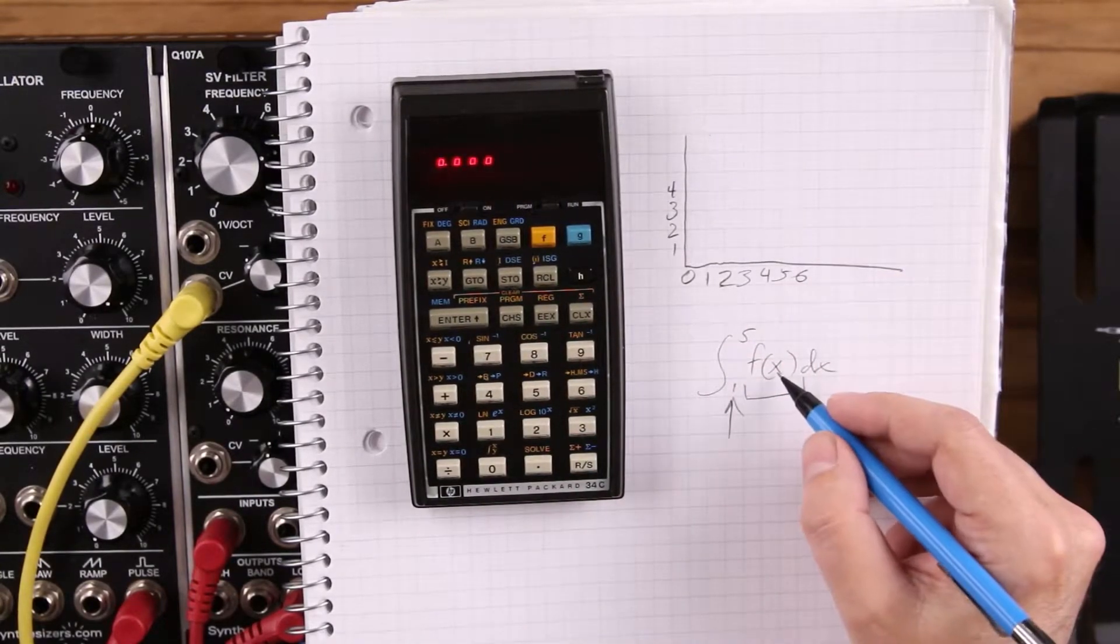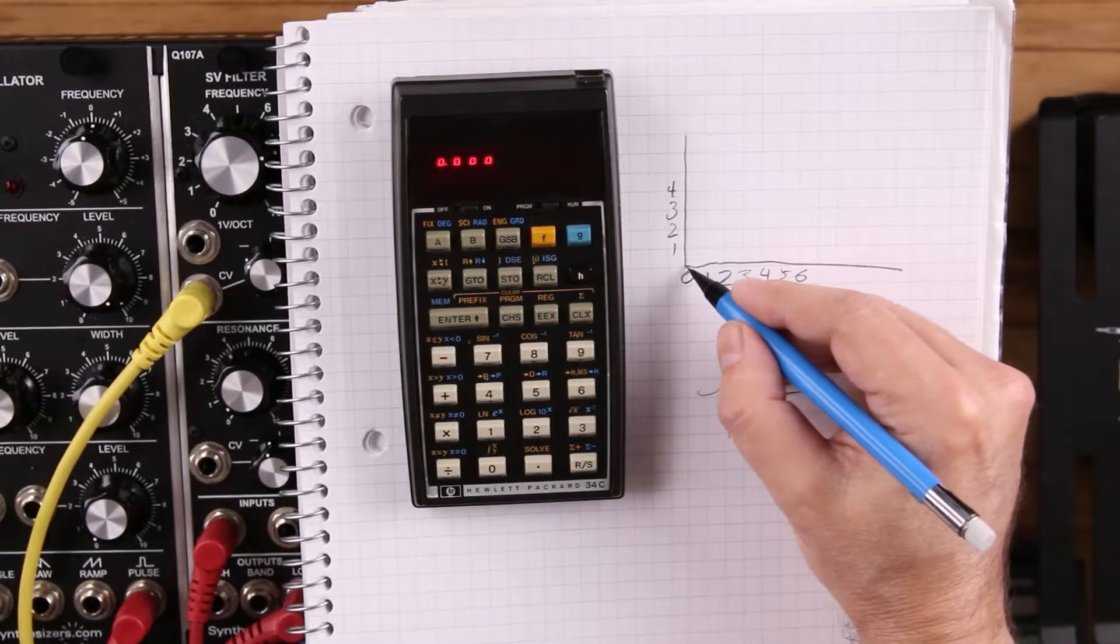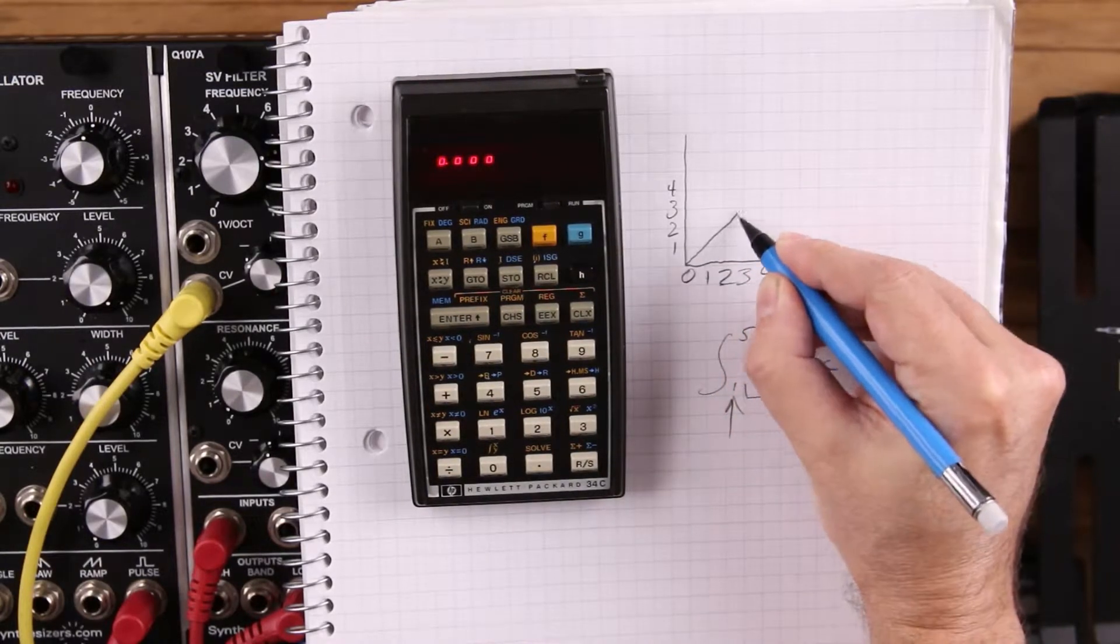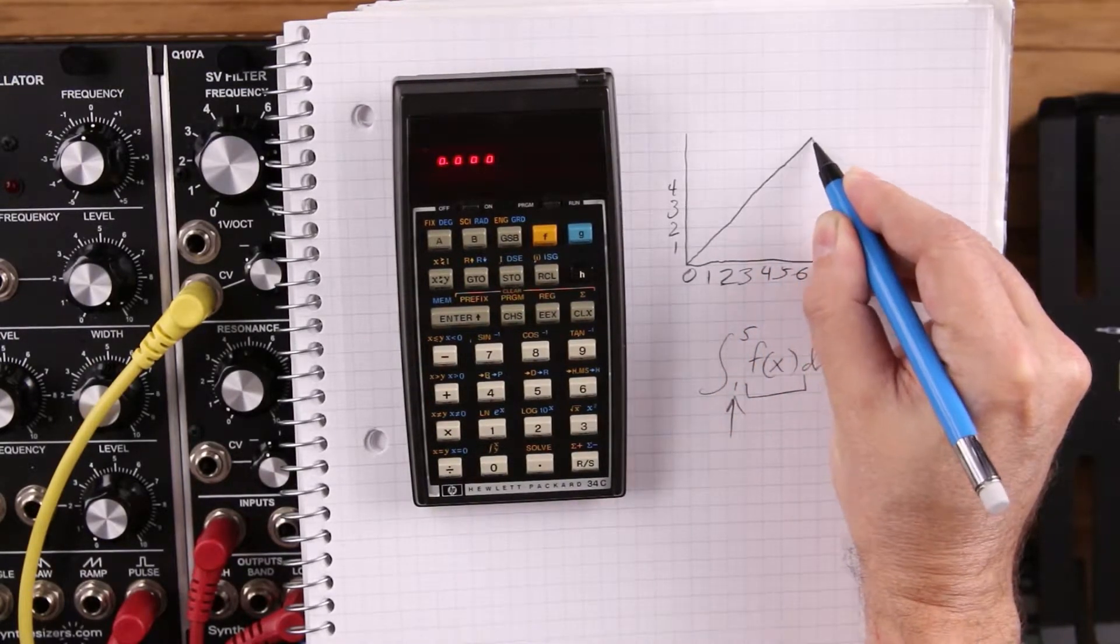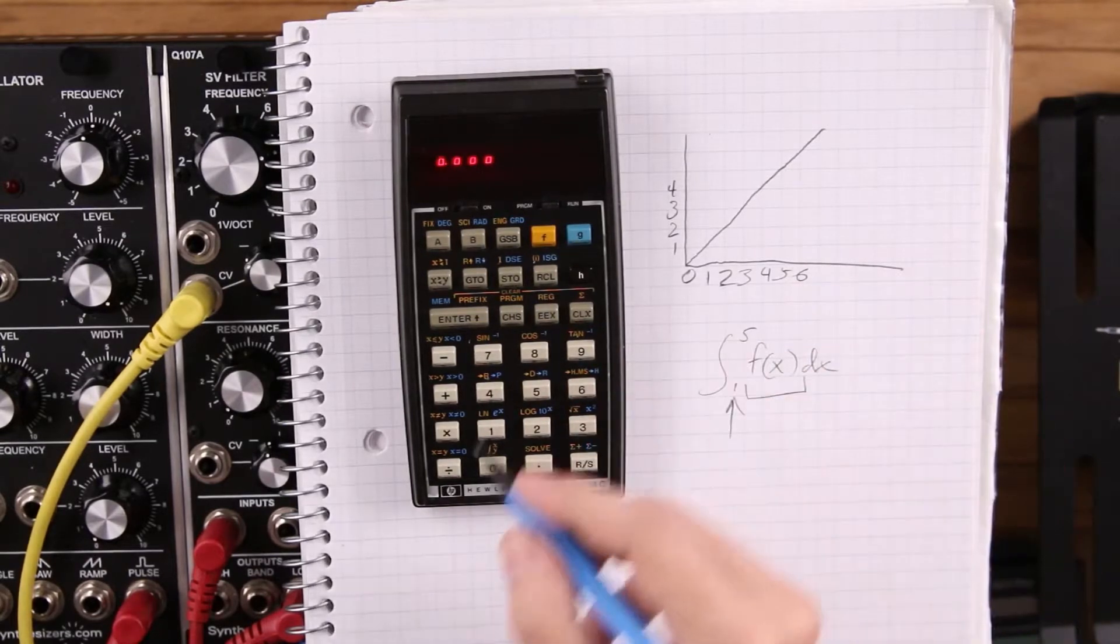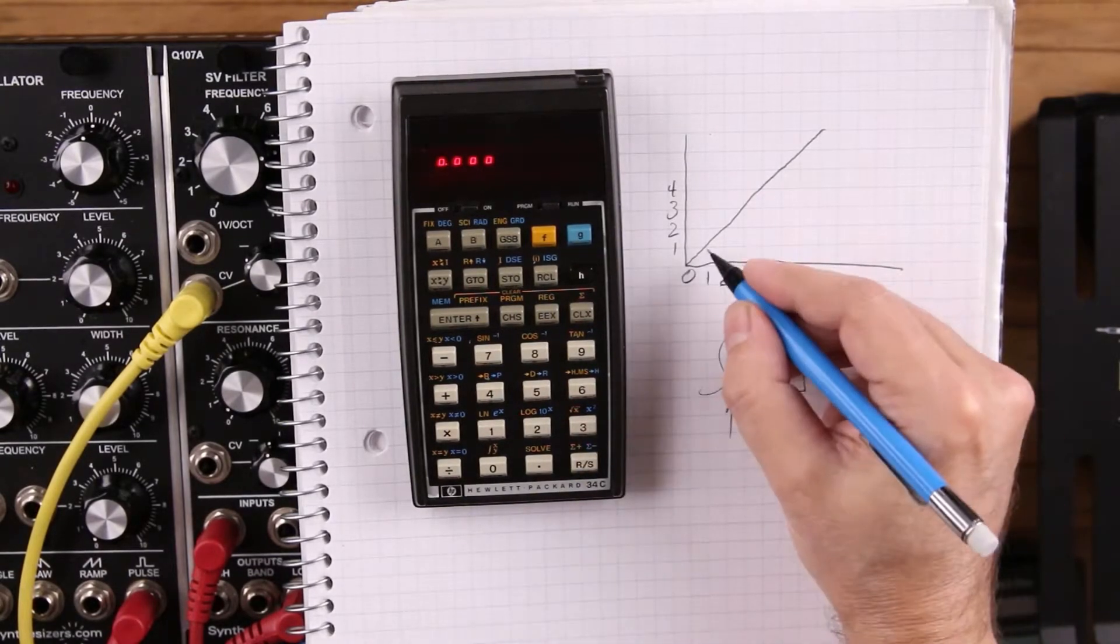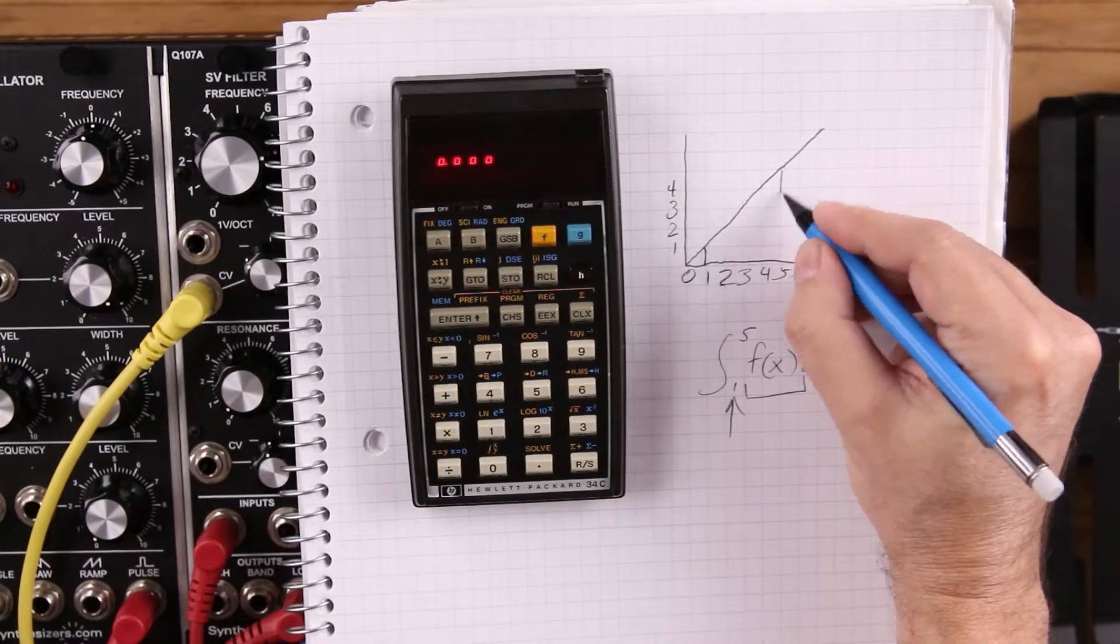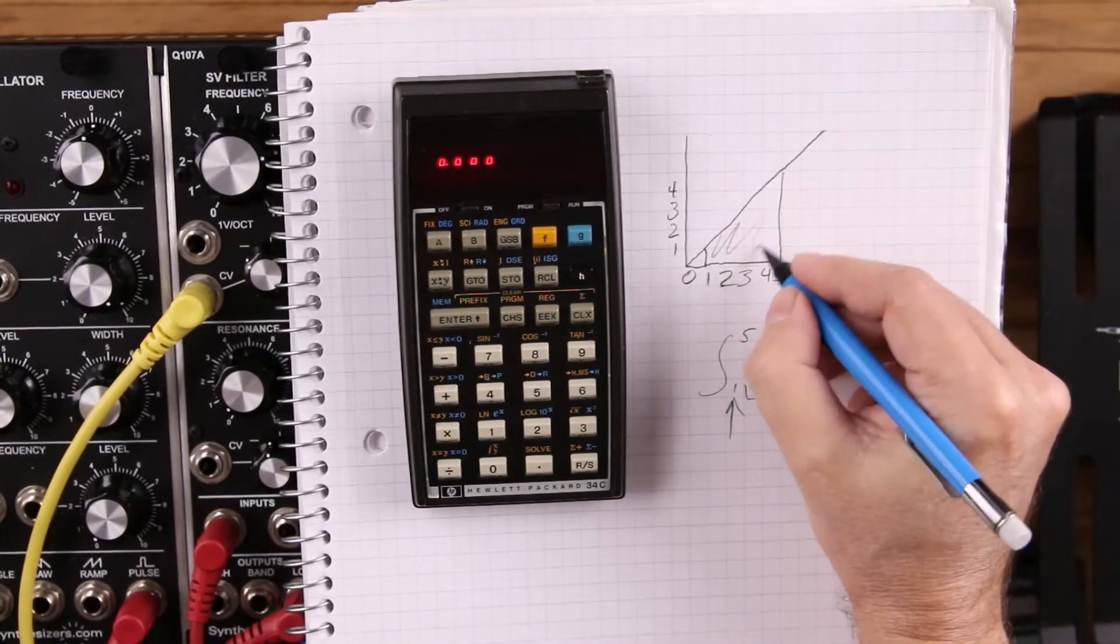So this function is real simple, it's just going to return the X value. So we're just going to get a line like that. And we can calculate this manually to test our integration function. So what we're going to look for is area under the curve here, this area here.